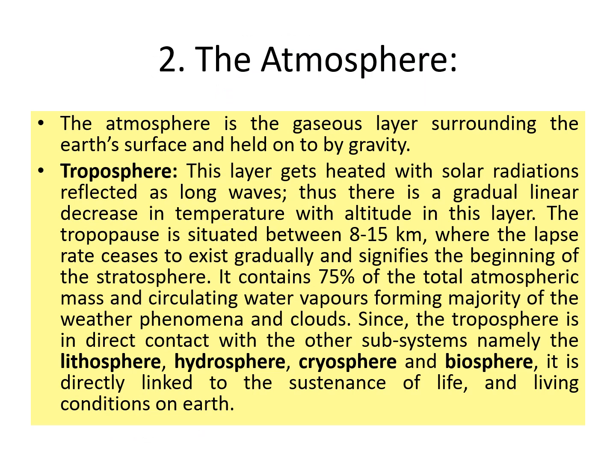The next layer is the atmosphere. The atmosphere is a gaseous layer surrounding the Earth's surface and it is held onto by the gravity of the Earth. The first layer of the atmosphere is the troposphere — the major layer where all weather phenomena happen due to the circulation of water vapors, and where the majority of the gases are also present.